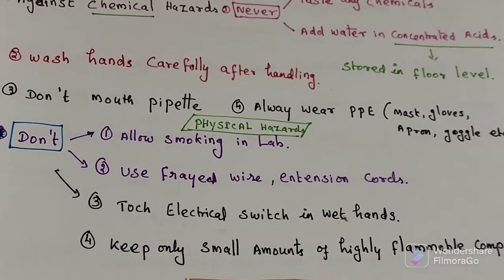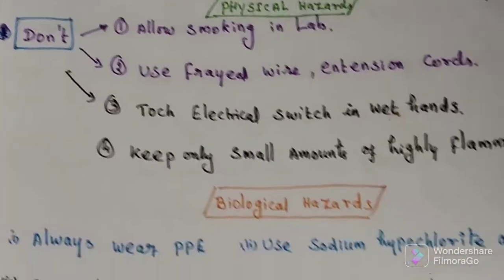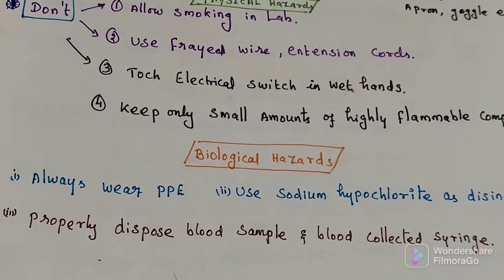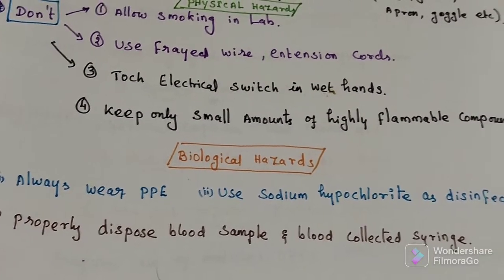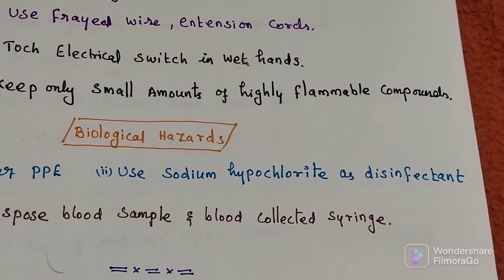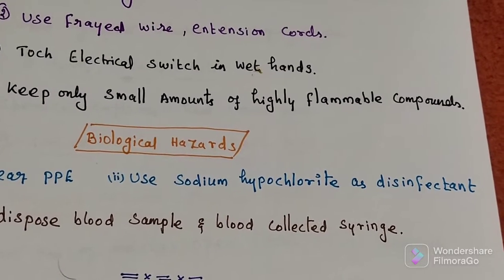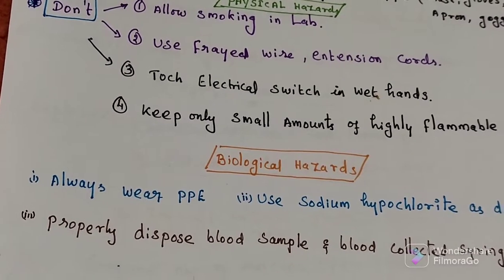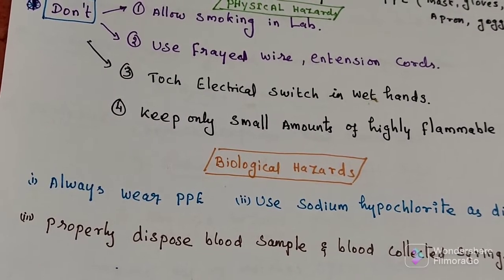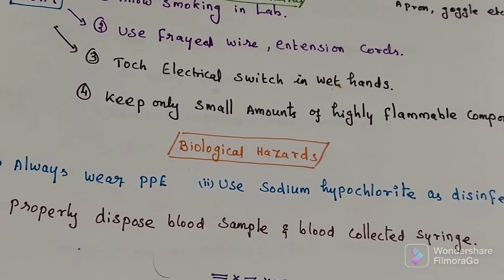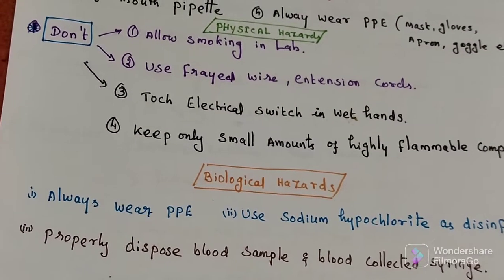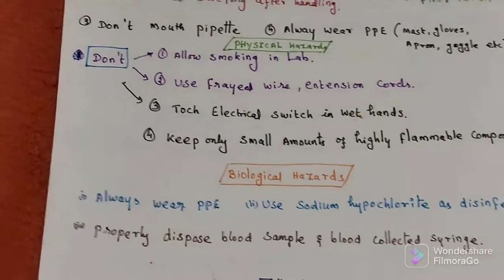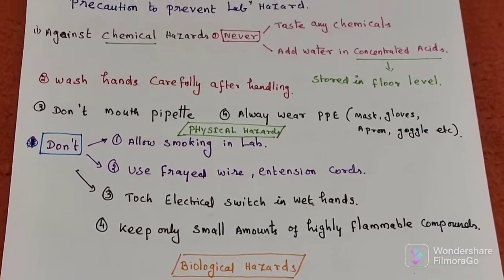The last precaution is against biological hazards. Always wear personal protective equipment to prevent biological hazards. Use sodium hypochlorite solution, which acts as a disinfectant. Properly dispose of blood samples and blood-collecting syringes. These are the safety measures used against laboratory hazards — physical, chemical, and biological. Thanks for watching.